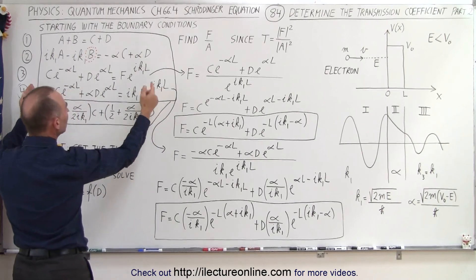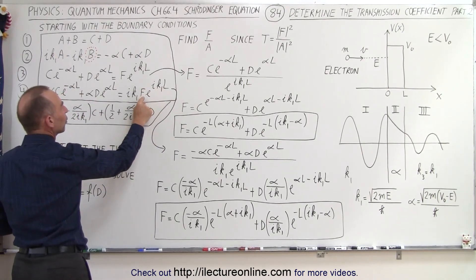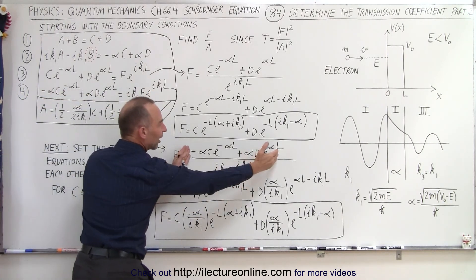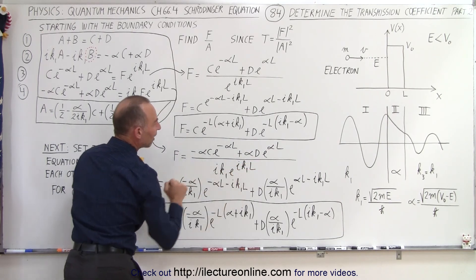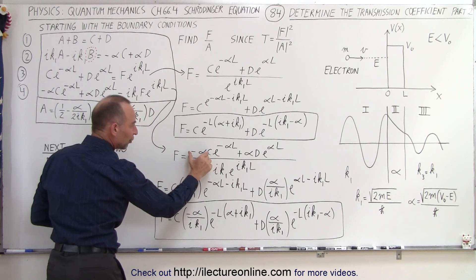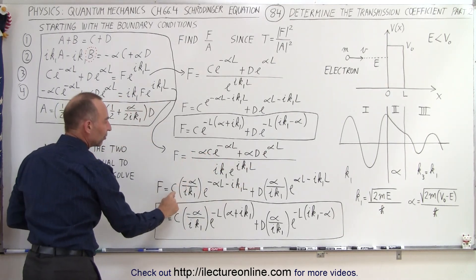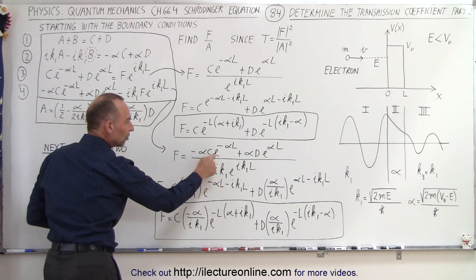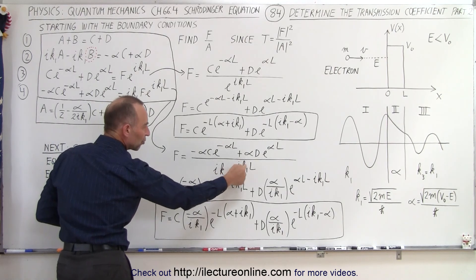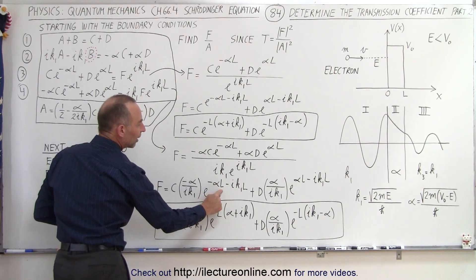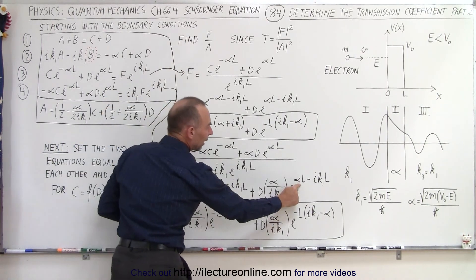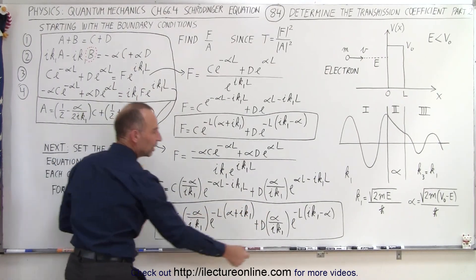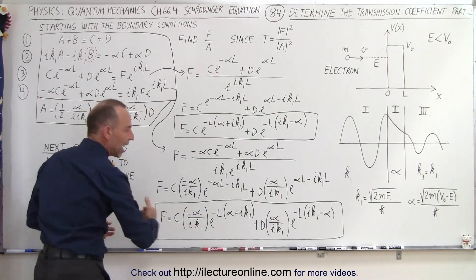We take the fourth equation again, we isolate f, so divide both sides of the equation by ik1 and e to the ik1L, which is exactly what we did here. We took the left side equation, divided by the coefficients of f, then we divide this into our first term, this into our second term, so we end up with C times the ratio of minus alpha over ik1, and then when we take this exponential divided by this exponential, we subtract the exponent, we end up with minus alpha L minus ik1L, and here alpha L minus ik1L. And then if we, again, factor out the negative L over here and the negative L over there, we have the expression that we want.